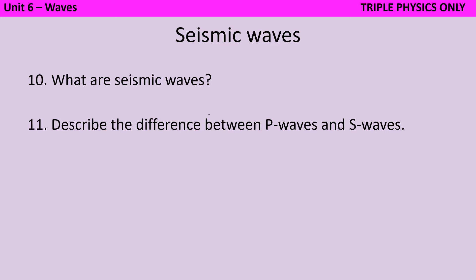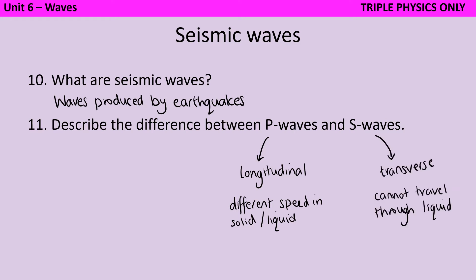Seismic waves are waves that are produced during an earthquake. And whereas P waves are longitudinal, and they have different speeds in solids and in liquids, S waves are transverse, and they cannot travel through a liquid.